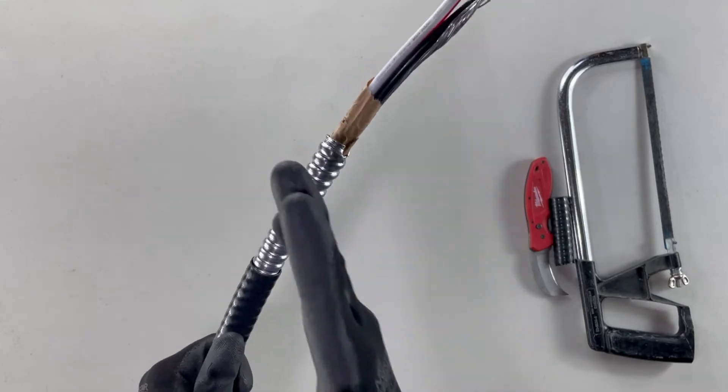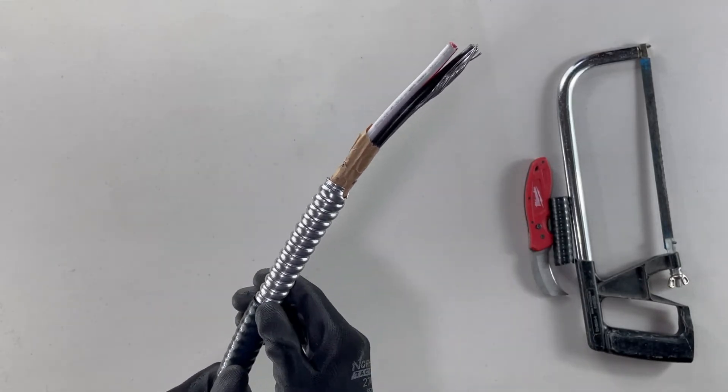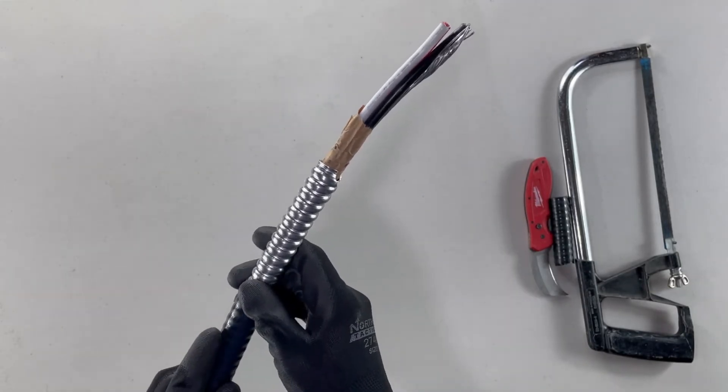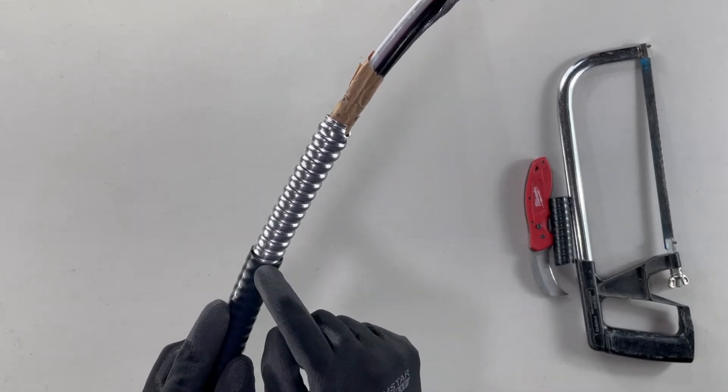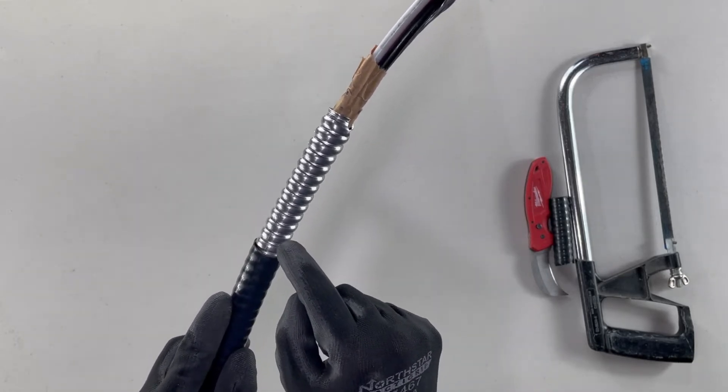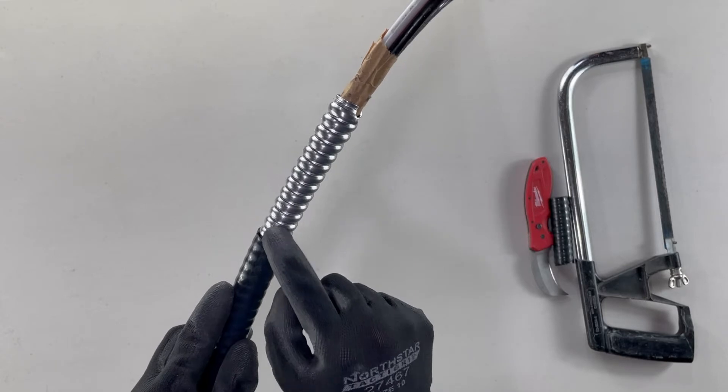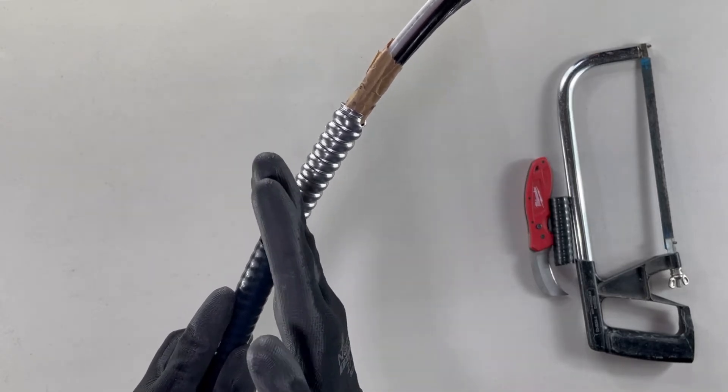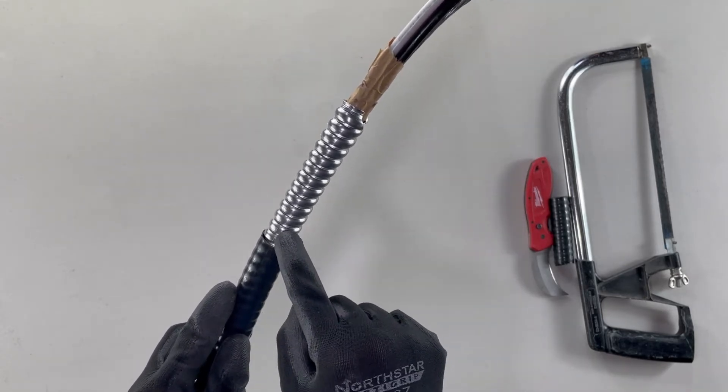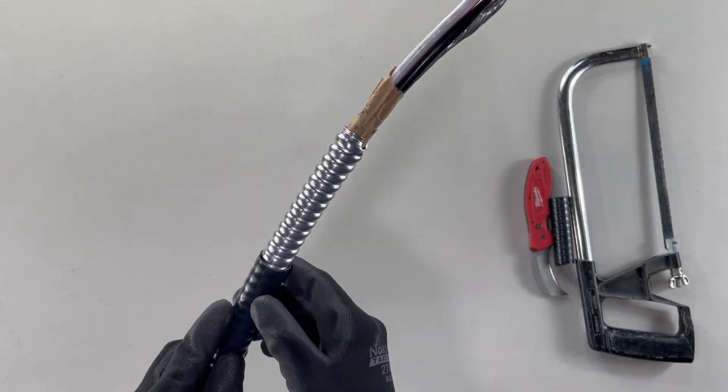Next, you're going to want to cut on an angle with your saw, similar to the way that you would strip BX. And you're going to be very careful not to go too far down through this casing. You really just want to score it, almost just nick it a little bit. Otherwise, you risk damaging the conductors underneath.